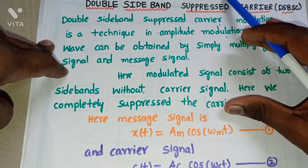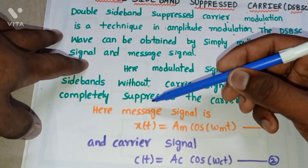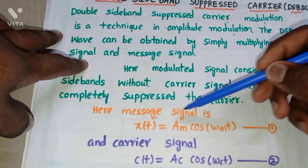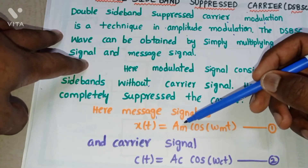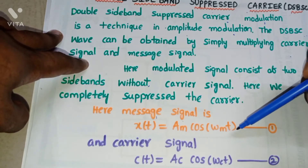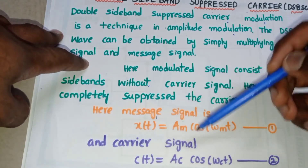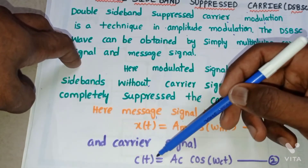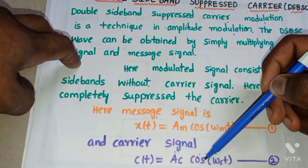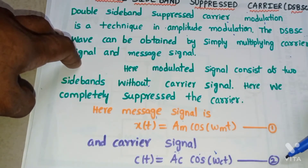As the name indicates, Double Sideband Suppressed Carrier means the modulated wave consists of two sidebands, but the carrier is completely suppressed. Now, the message signal X(t) = AM·cos(ωm·t), where AM is the amplitude and cos(ωm·t) represents the frequency of the message signal — treat this as equation 1. The carrier signal C(t) = AC·cos(ωc·t), where AC is the amplitude and cos(ωc·t) is the frequency of the carrier signal — this is equation 2.